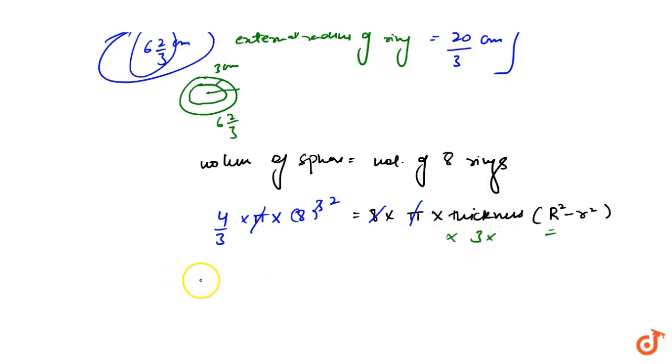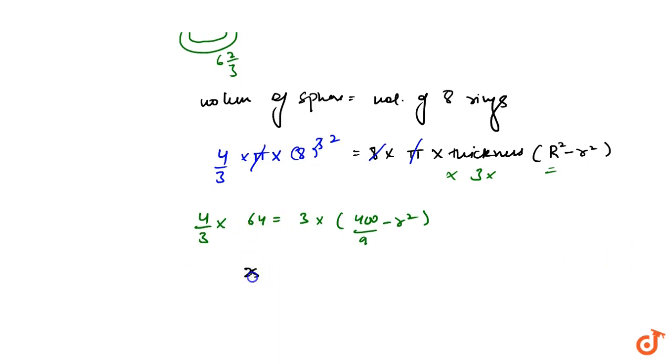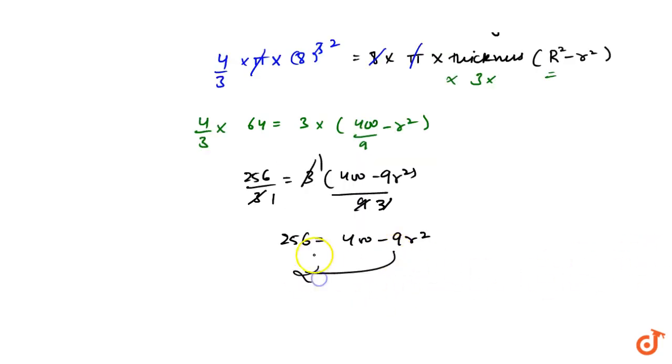So here will be 4 upon 3 into 8 square is 64 equal to 3 into 3, so here will be 4 upon 9 minus r square. So 256 equals 400 minus 9 r square.